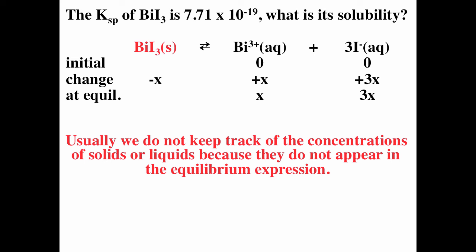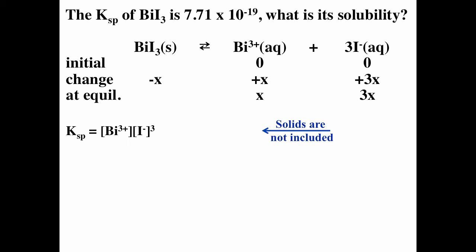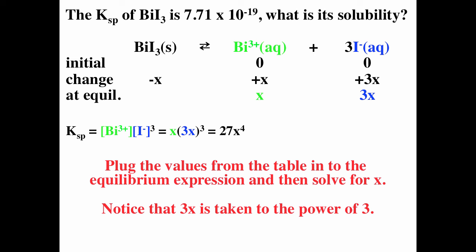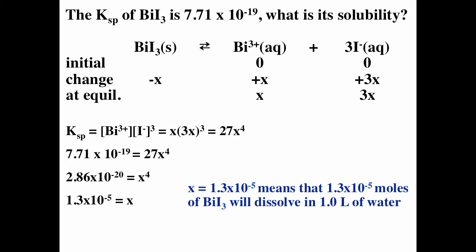Writing the equilibrium expression — products over reactants, coefficients become exponents, pure solids and liquids excluded — we get Ksp = [Bi³⁺][I⁻]³. The Bi³⁺ concentration at equilibrium is x, and the I⁻ concentration is 3x. Note that both the 3 and the x get cubed: (3x)³ = 27x³. So Ksp = x · 27x³ = 27x⁴. Dividing both sides by 27 and taking the fourth root gives x = 1.3 × 10⁻⁵.